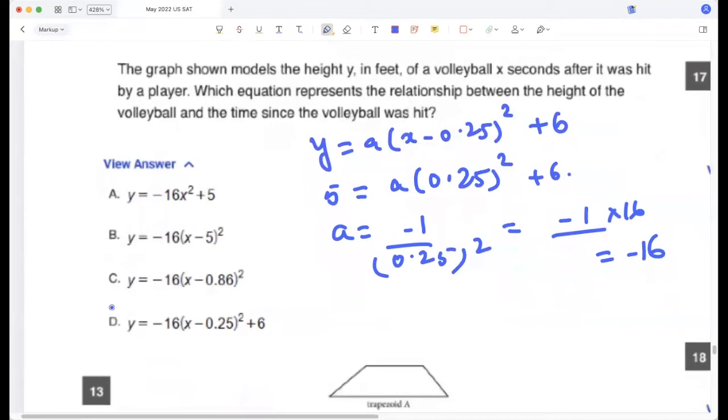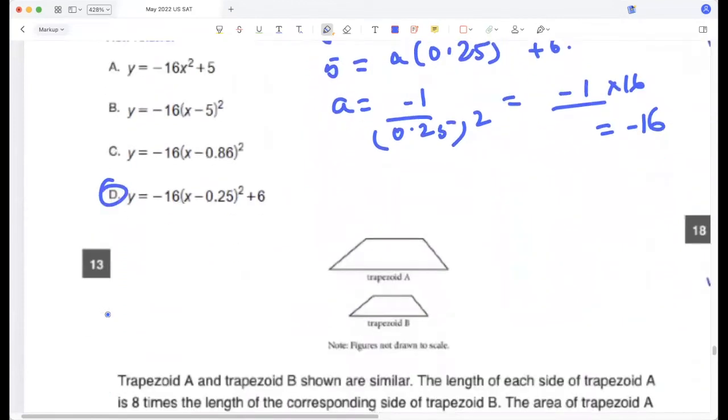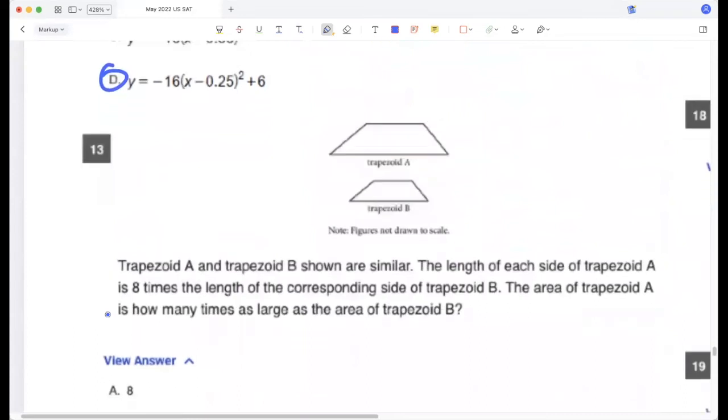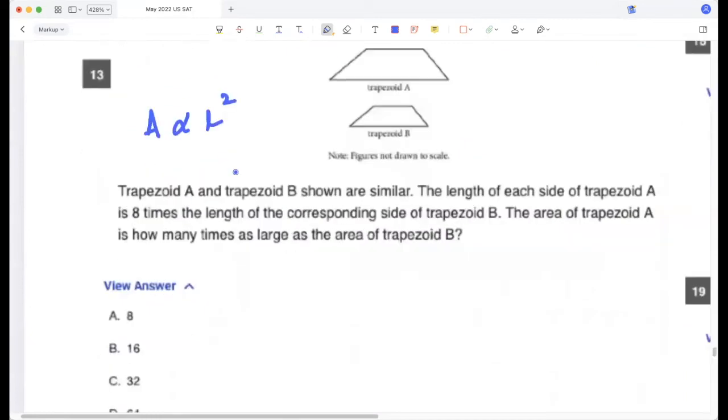Trapezoid A and trapezoid B are shown as similar. The length of each side of A is eight times the length of corresponding side of B. Area of trapezoid A is how many times as large? So area is proportional to length squared. So it would be 64.